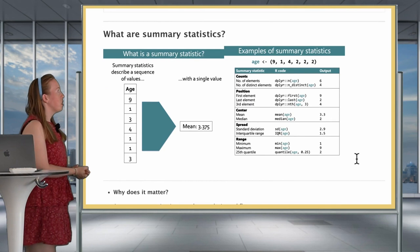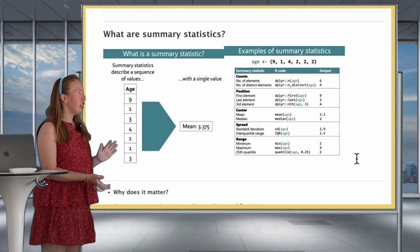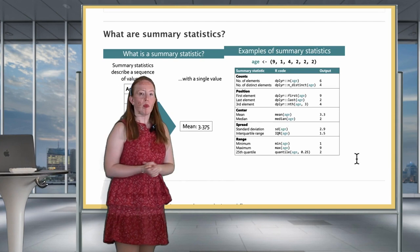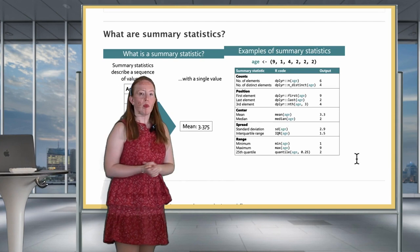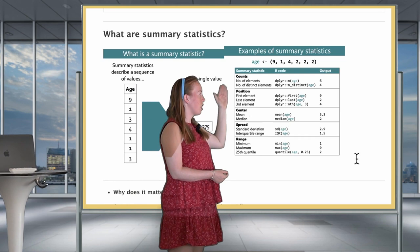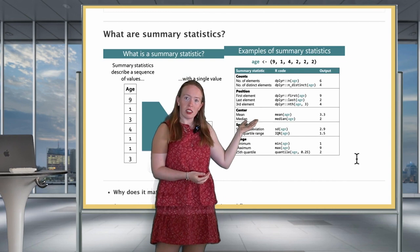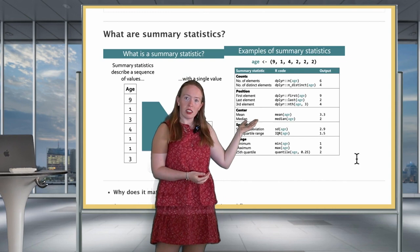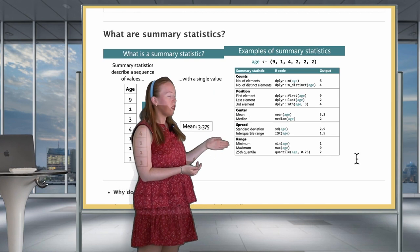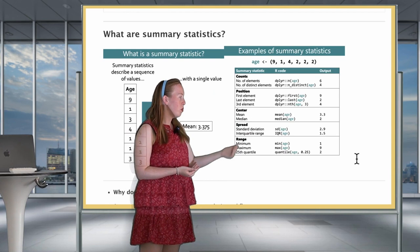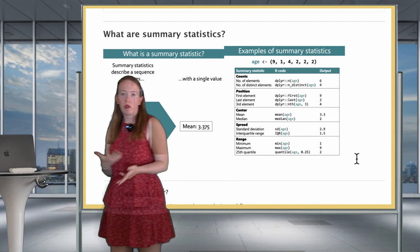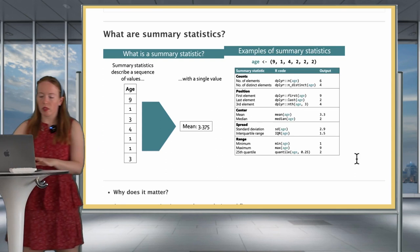We'll start this lesson off by a small recap as to what exactly a summary statistic is. A summary statistic is when you have a sequence of values, such as one of our variables like age, and you summarize it into a single value such as the mean. There are many different kinds of ways: it can be the counts, the position (first, last, nth), the center (mean or median), the spread (standard deviation or interquantile range), or elements in a specific range such as the minimum, maximum, or quantiles.